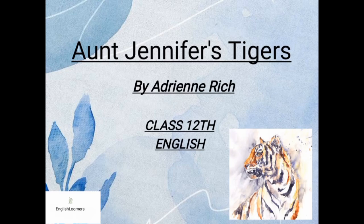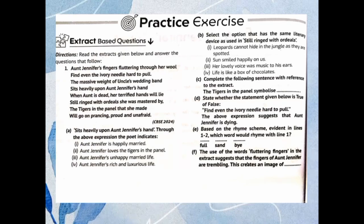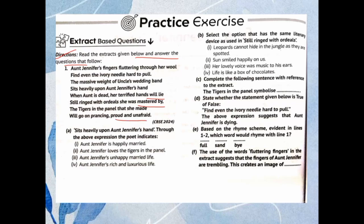Let's get started. The first extract-based question — read the extract given below and answer the questions that follow. The extract is: 'Aunt Jennifer's fingers fluttering through her wool, find even the ivory needle hard to pull. The massive weight of uncle's wedding band sits heavily upon Aunt Jennifer's hand. When Aunt is dead, her terrified hands will lie still, ringed with ordeals she was mastered by. The tigers in the panel that she made will go on prancing, proud and unafraid.'